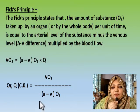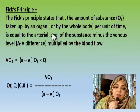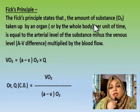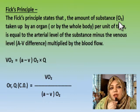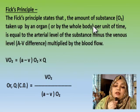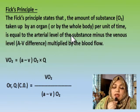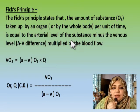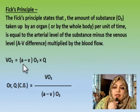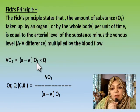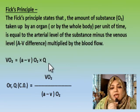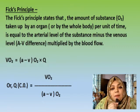By 'substance' we are indicating oxygen — that means the amount of oxygen an organ takes up per unit time is equal to the arterial concentration of that substance minus the venous concentration of that substance, times the blood flow. So the arterial concentration of oxygen minus the venous concentration of oxygen, multiplied by Q (where Q means blood flow), equals the amount of oxygen taken up by an organ.